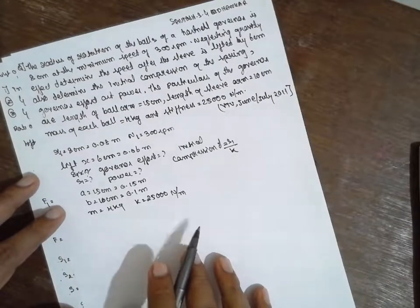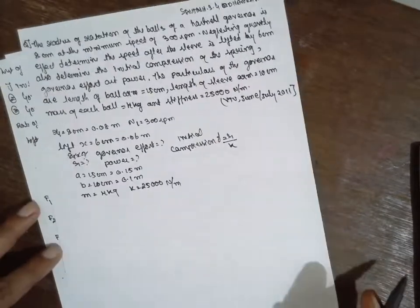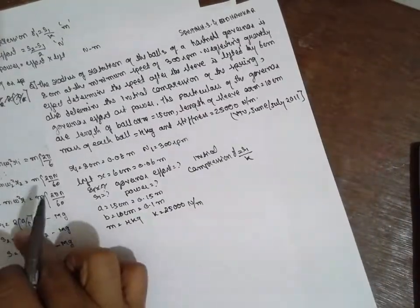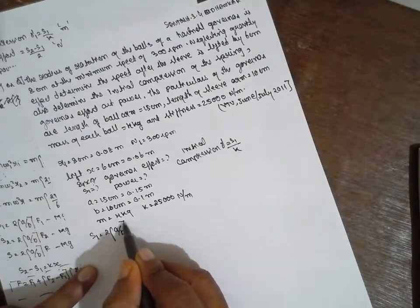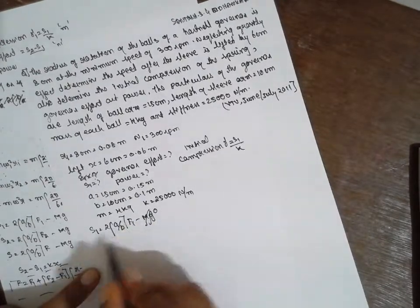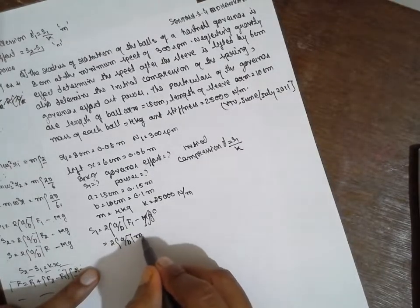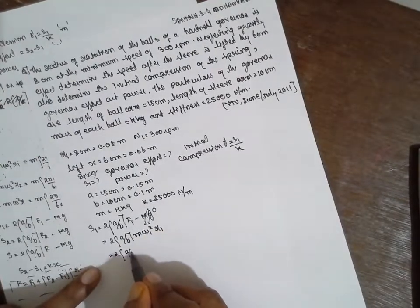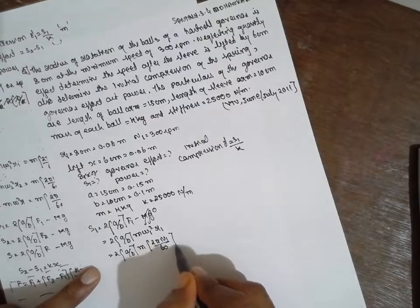The formula for S1 is: S1 = (2A/B) × F1 − Mg, where Mg is not given as zero. Here F1 = (2A/B) × M × ω1² × R1, which can be written as (2A/B) × M × (2πN1/60)² × R1.